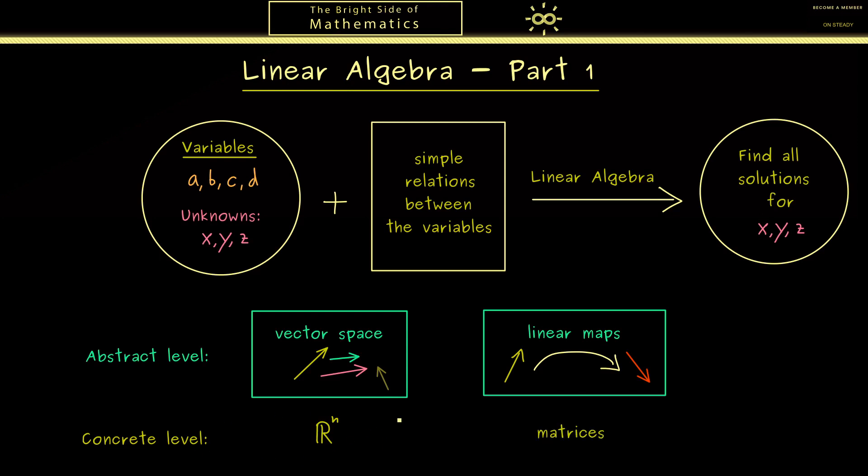Then on this level a linear map just corresponds to something we can put in a table. And such a table we just call a matrix. Now you know in this course we first discuss the concrete level here and then we go to the abstract level afterwards.